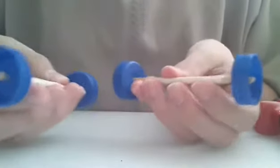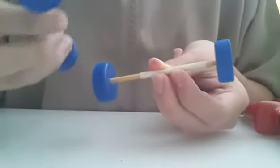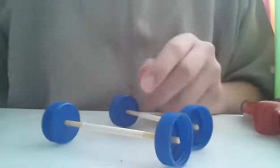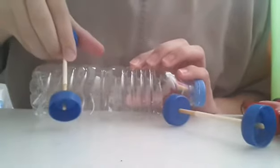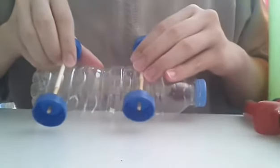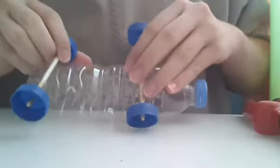After I made it like this, I put each one of them into two of the sticks to make wheels. Now I will take the bottle and I will super glue here and here to be a car.